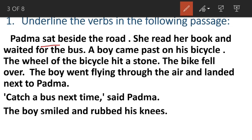She read her book and waited for the bus. What are the verbs here? Read, waited. A boy came past on his bicycle. Came is a verb. The wheel of the bicycle hit a stone — hit is a verb. The bike fell over — fell is a verb. The boy went flying through the air and landed next to Padma.